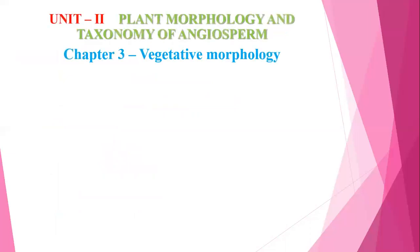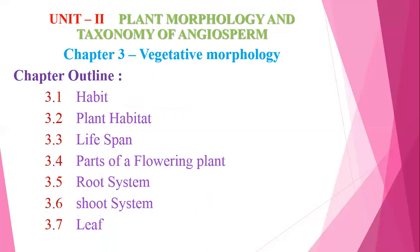Unit 2 is Plant Morphology and Taxonomy of Angiosperms — covering plant morphology and full details of angiosperms. Chapter 3 is Vegetative Morphology. The chapter outline begins with: first, Habit — the variations in plant habit; and second, Plant Habitat — information about where plants grow.